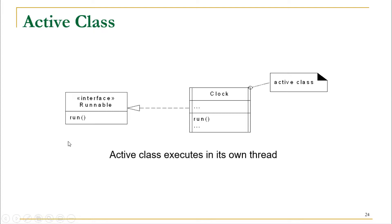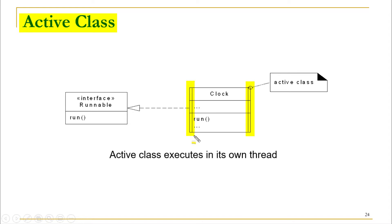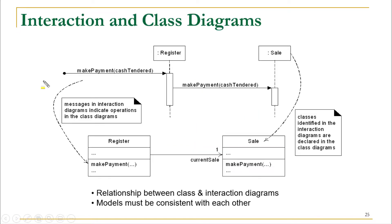With reference to multi-threading, there is a concept of a thread. If you want to represent a class that executes in its own thread, it is called an active class. Active classes are shown with double-lined boundaries on their left and right sides. This notation helps us understand that, for example, the Clock class executes in its own thread. Such classes are called active classes.